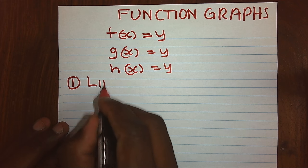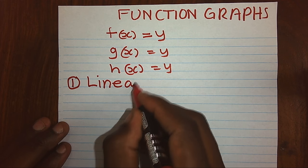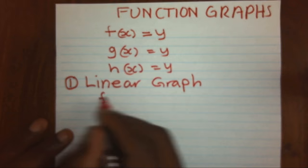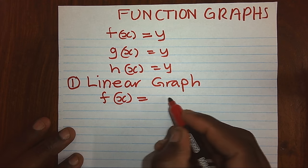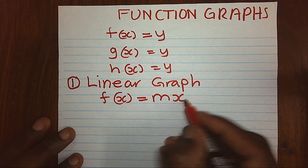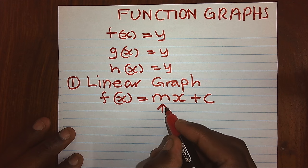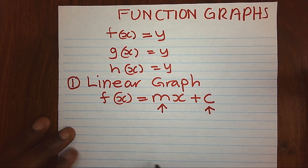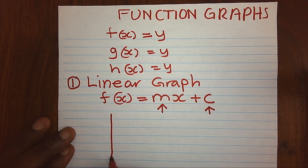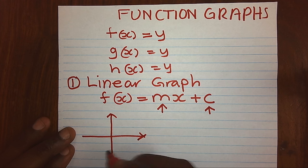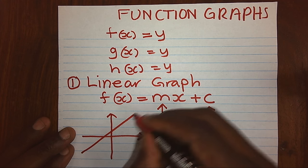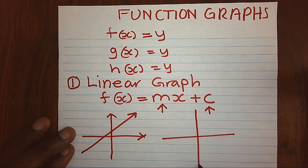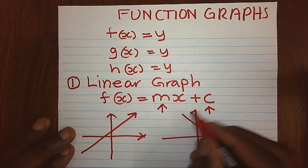We have what we call a linear graph. A linear graph is a straight line graph. It's given by a function y equals mx plus c, where we know m is the gradient and c is the y-intercept. When the line slopes upward, that's a positive gradient. And when it faces down, that's a negative gradient.